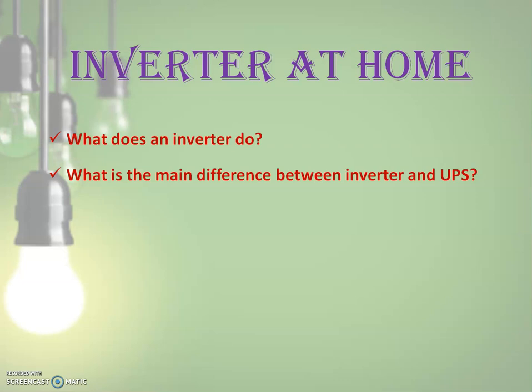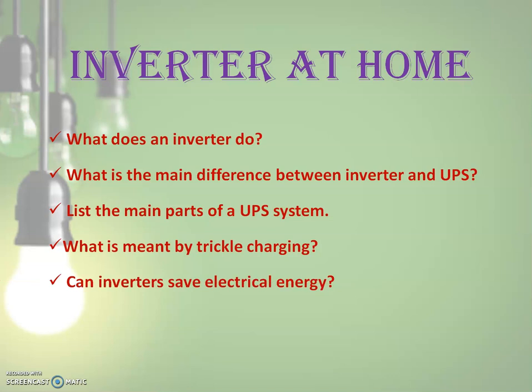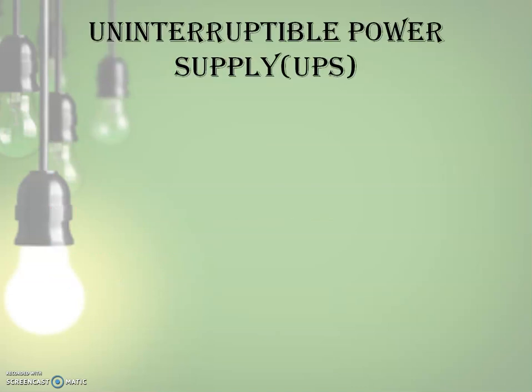You will be able to answer the following questions: What does an inverter do? What is the main difference between an inverter and a UPS? List the main parts of a UPS system. What is meant by trickle charging? And can an inverter save electric energy? An inverter is basically a device which converts direct current (DC) to alternating current (AC), and it cannot provide electricity backup on its own.